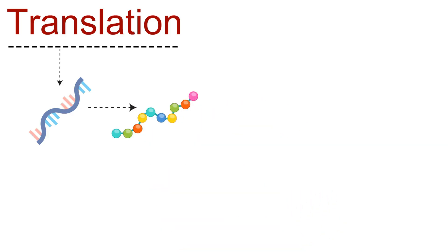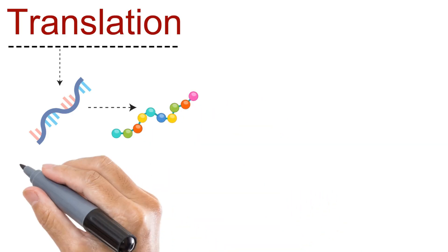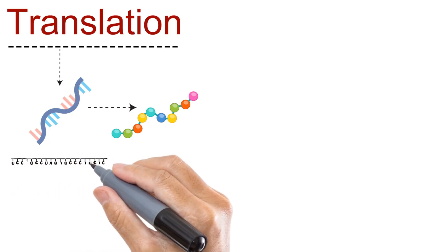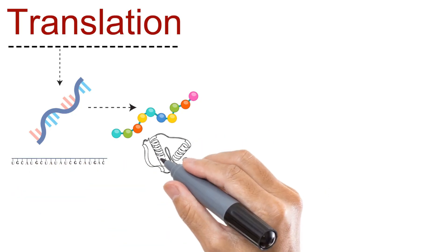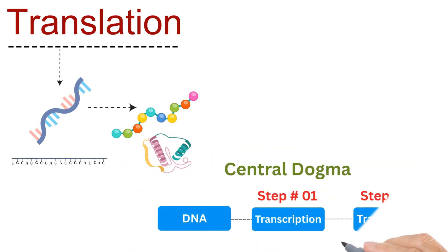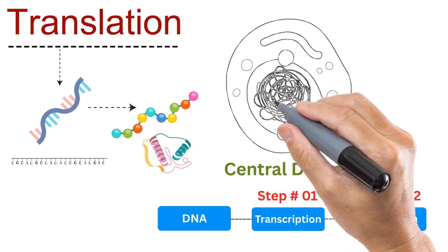In simpler words, it's the step where the genetic code written in mRNA is translated into a functional protein. It is the second step of the central dogma and takes place in the cytoplasm.